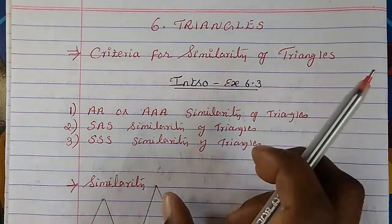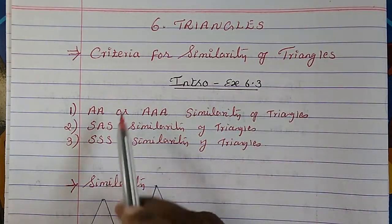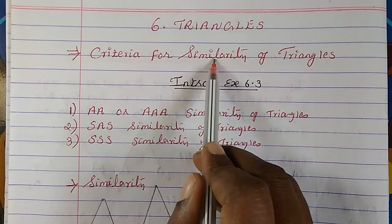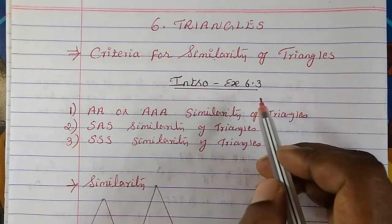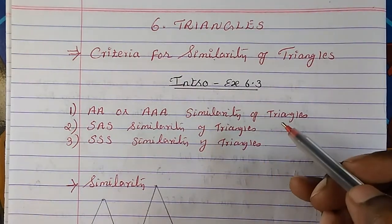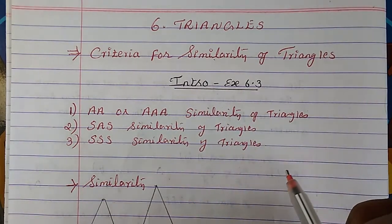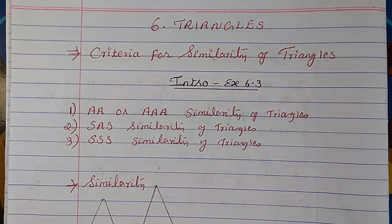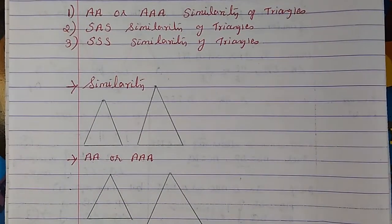When do we say that two triangles are similar? What are the conditions for that? Before we look at those conditions, I will explain the meaning of similarity. I already explained this in the introduction for exercise 6.1, but here is a revision for exercise 6.3. So first, once again, similarity means...